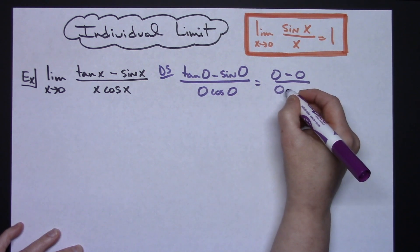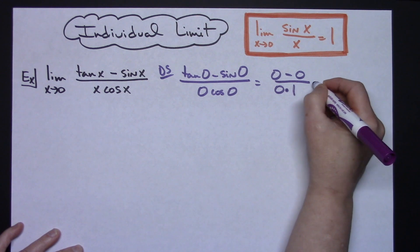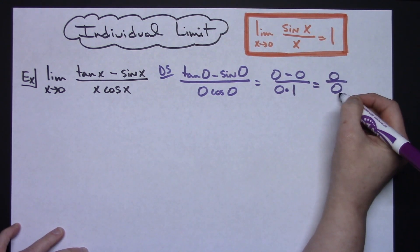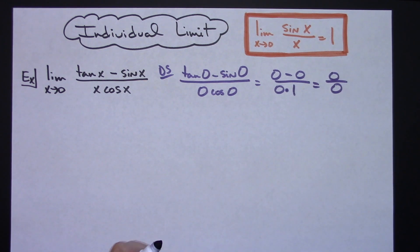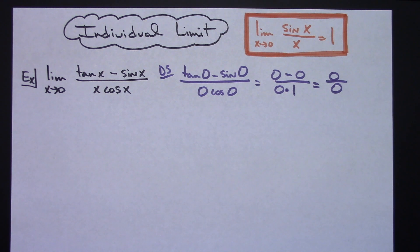This is 0 times cosine of 0 which is 1, giving me 0 on top. 0 times 1 gives me 0 on the bottom. So I definitely have that indeterminate form of 0 over 0, so I can apply algebra properties to manipulate this to work out the limit.